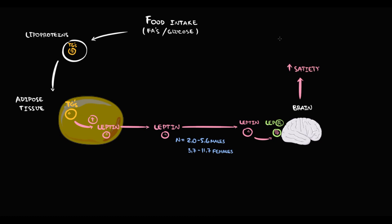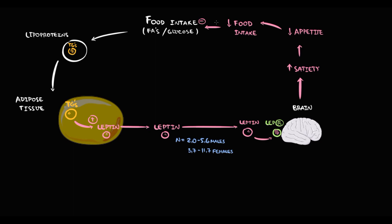Activation of leptin receptor provokes a feeling of satiety. The stronger is the satiety, the lower becomes the appetite. And the lower is the appetite, the lower is the food intake. So basically, by leptin secretion we can regulate the amount of food that we consume.